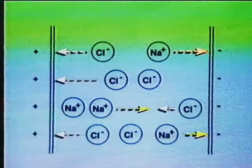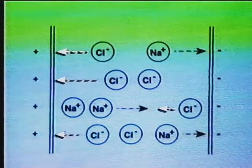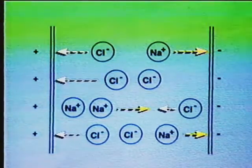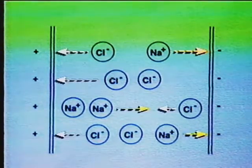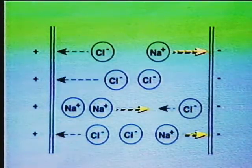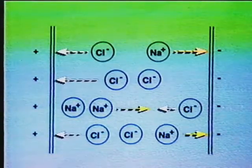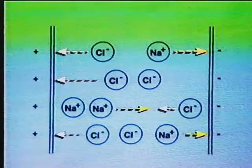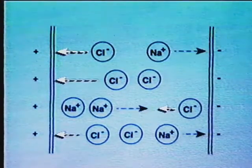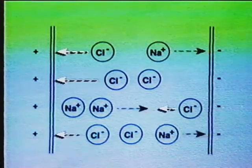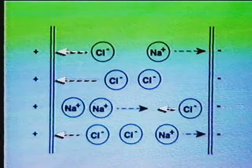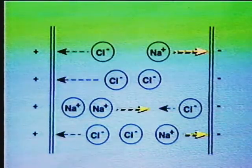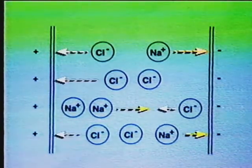In solution, ions move independently of each other. When an electric potential is applied, the positive sodium ions or cations move toward the negative electrode, the cathode. The negative chloride ions or anions move toward the positive electrode, the anode. This migration of ions toward the oppositely charged electrodes produces the electric current.